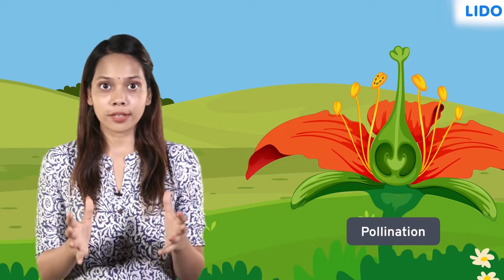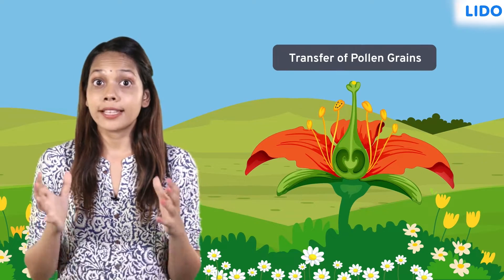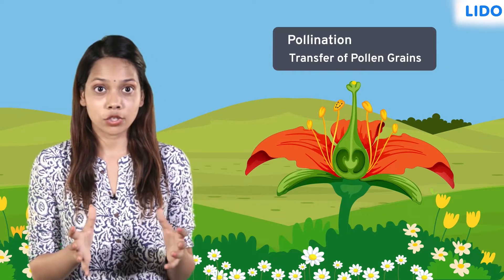Fertilization in plants happens due to the process of pollination. Insects, wind, or water carry the pollen from the anther of one flower to the stigma of the other flower. This process of transfer of pollen grains is known as pollination.